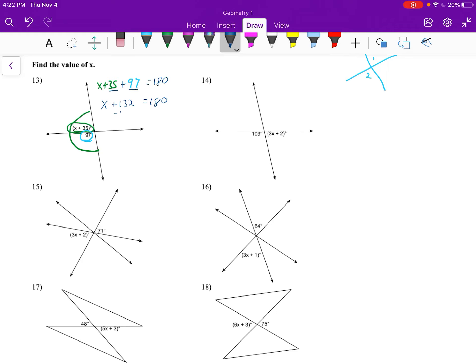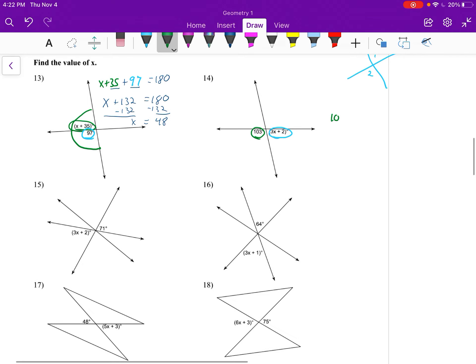We got x plus 35 and 97, that adds up to equal 132 equals 180. We would subtract 132 from both sides and we get x is equal to 48. 14 is very similar. The 103 plus the 3x plus 2, they have to add up to equal 180 degrees.